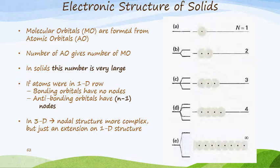So if there are three anti-bonding orbitals, then you're going to have two nodes in between those anti-bonding orbitals. And in three dimensions the nodal structure becomes very much more complex, but it's really just an extension on the one-dimensional structure.